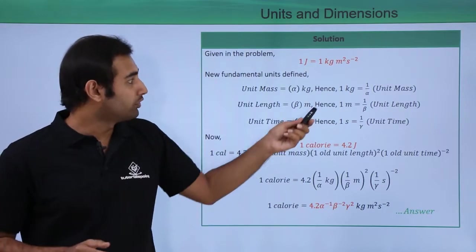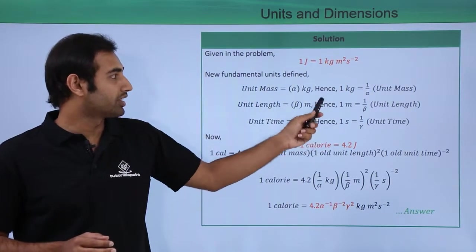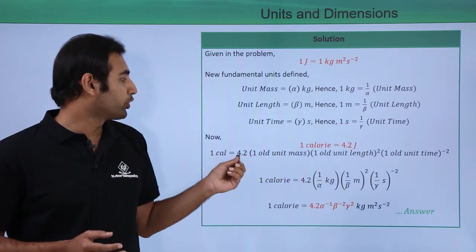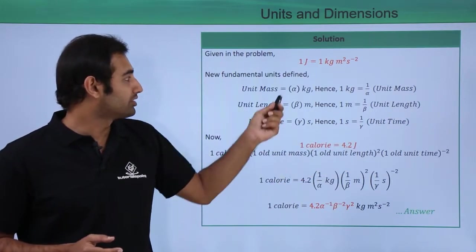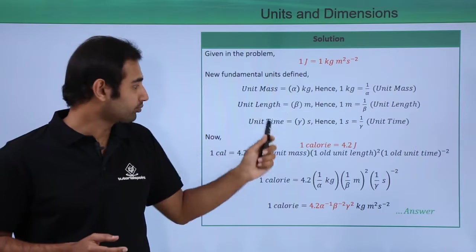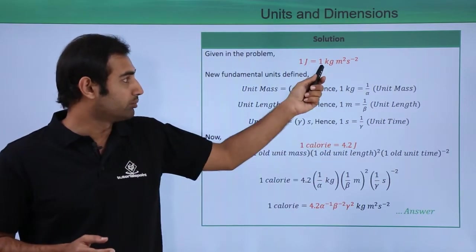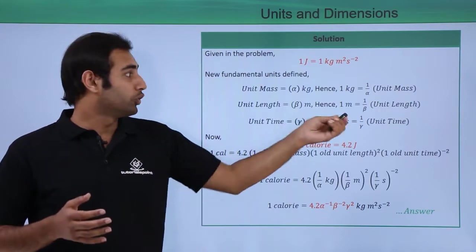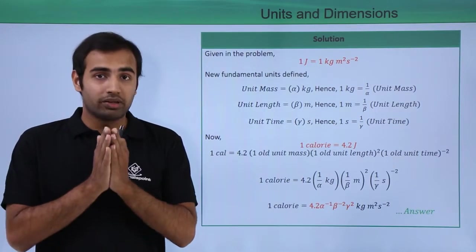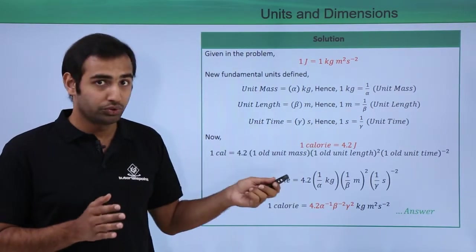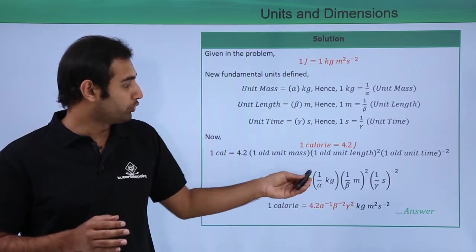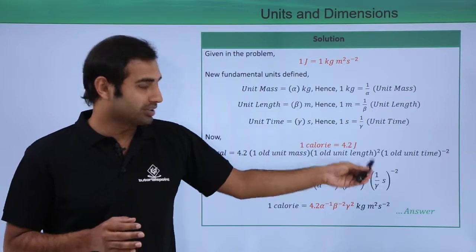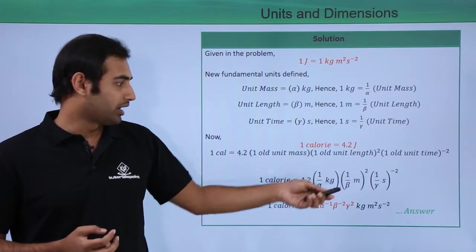Taking these ideas forward, I will put the values of 1 kg, 1 meter and 1 second in the original equation as you can see over here. So, 4.2 into 1 old unit mass, which is over here 1 kg, 1 old unit length which is 1 meters and 1 old unit time which is over here 1 second. So if I put the values of this in terms of new units, I will get 4.2 into 1 by alpha kg into 1 by beta meter whole square, 1 by gamma second whole raised to the power minus 2. And upon solving this, I arrive at this equation as you can see.